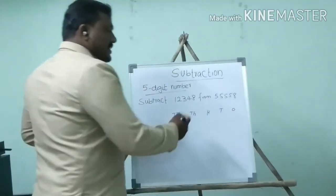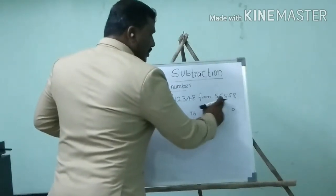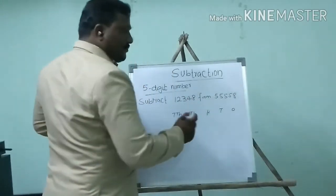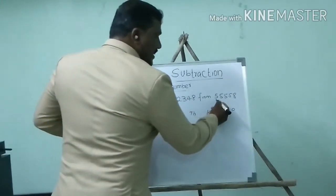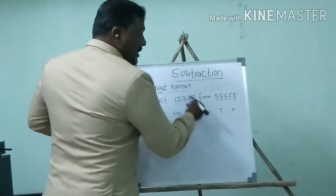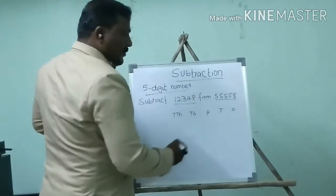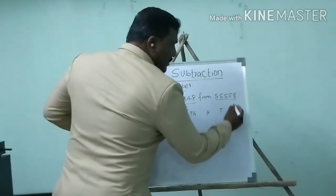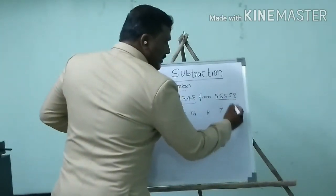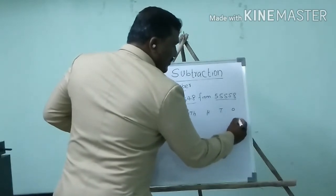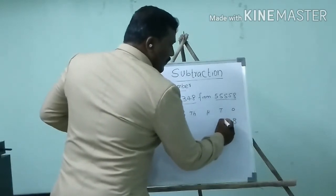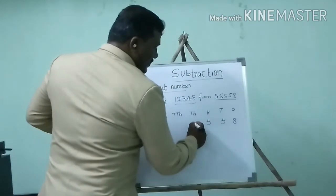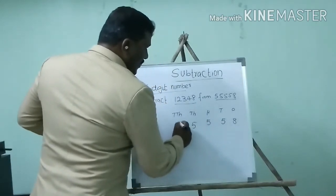Now I will place the numbers. This is the minuend and this is the subtrahend. First I will place the minuend: 8, 5, 5, 5, 5.